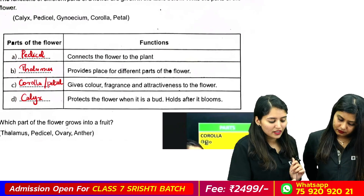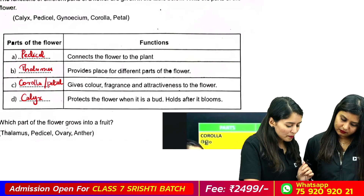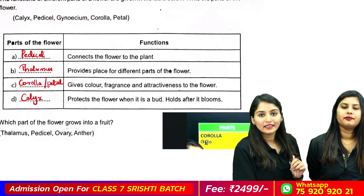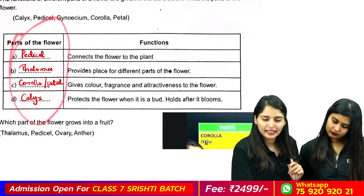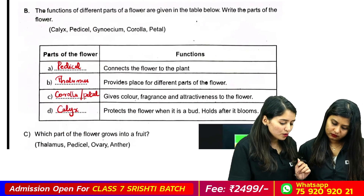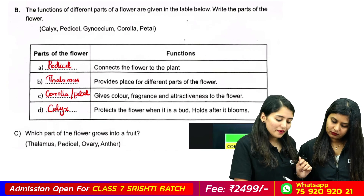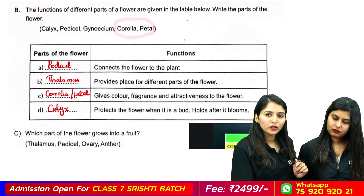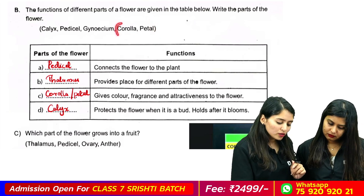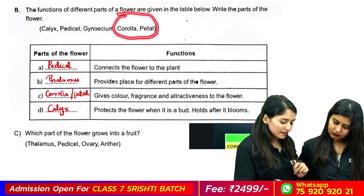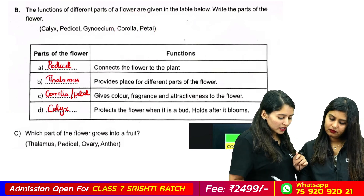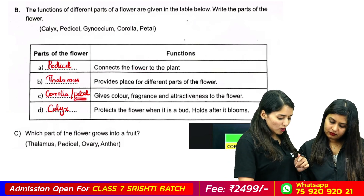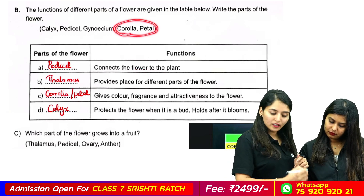There is a special question. This is a calyx pedicel, gynetium, corolla petal. These are the options. Parts of flower — select. If we call it a petal, this is the part of a petal. If we call it in this case, then we can call it a petal.